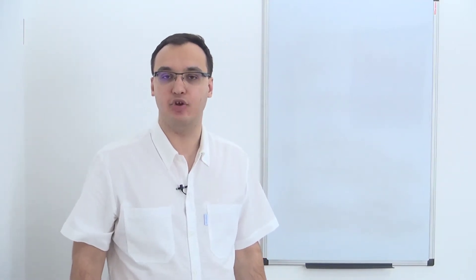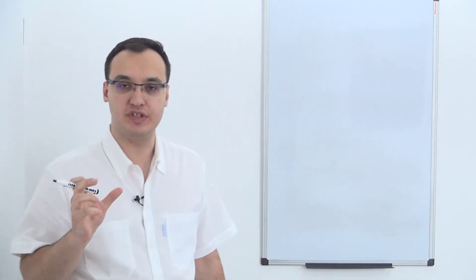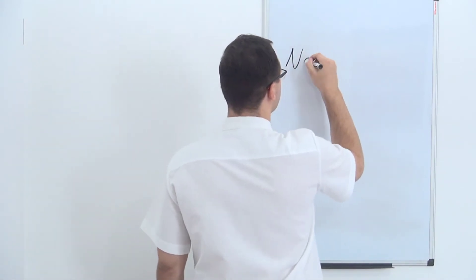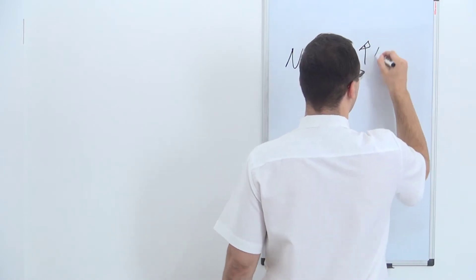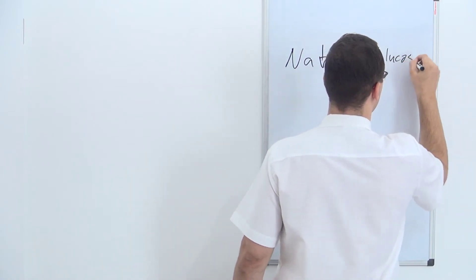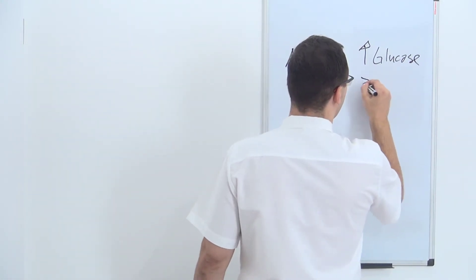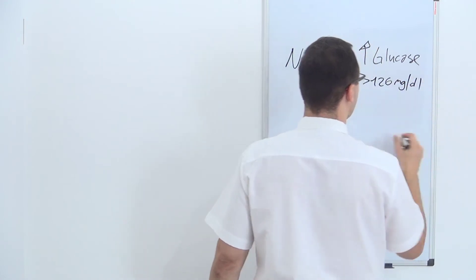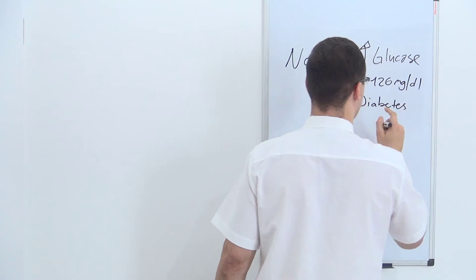Hello, today we'll look at the causes of hyponatremia. Hyponatremia is a low amount of sodium, and one of the causes is hyperglycemia — that means a high amount of glucose. So we have a low amount of sodium caused by a high amount of glucose. When do we have a high amount of glucose? For example, when we have more than 126 milligrams per deciliter, we call it diabetes mellitus.